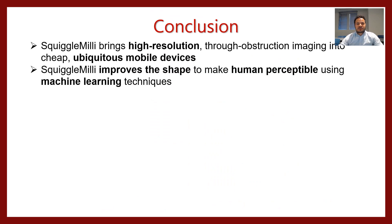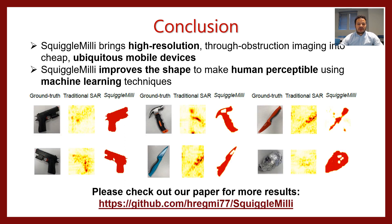Finally, to summarize: SQL Millie brings high-resolution through-obstruction imaging into cheap, ubiquitous mobile devices. SQL Millie improves the shape to make it human perceptible using machine learning techniques. Please feel free to check out our paper for more design details and results. Thank you.